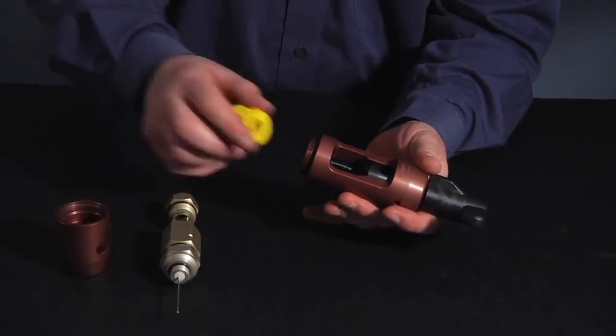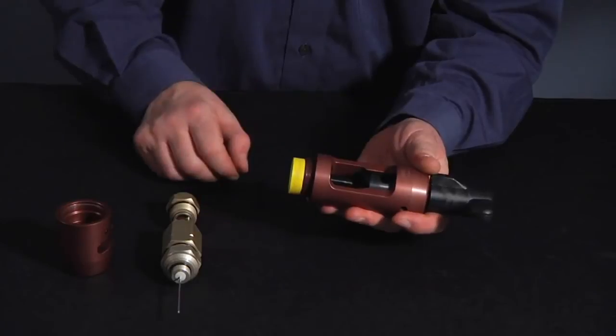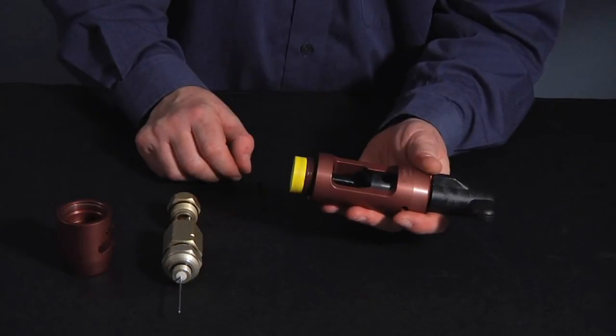When using the tool as two pieces, the guide sleeve remains in the coring tool to align the cable with the coring blade.